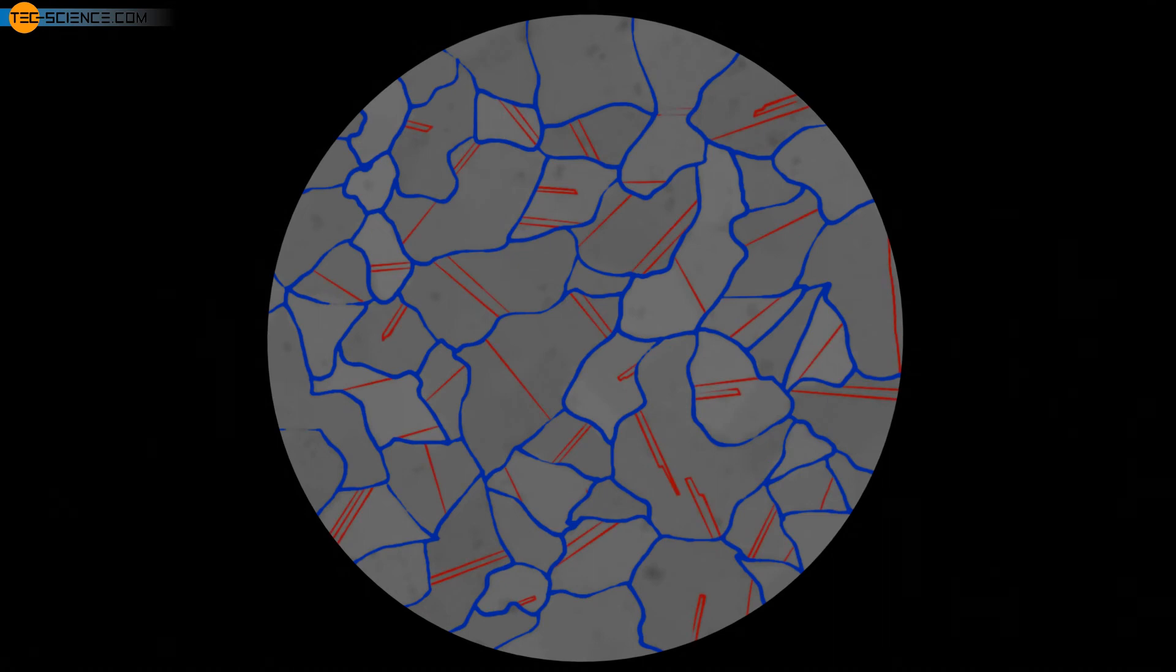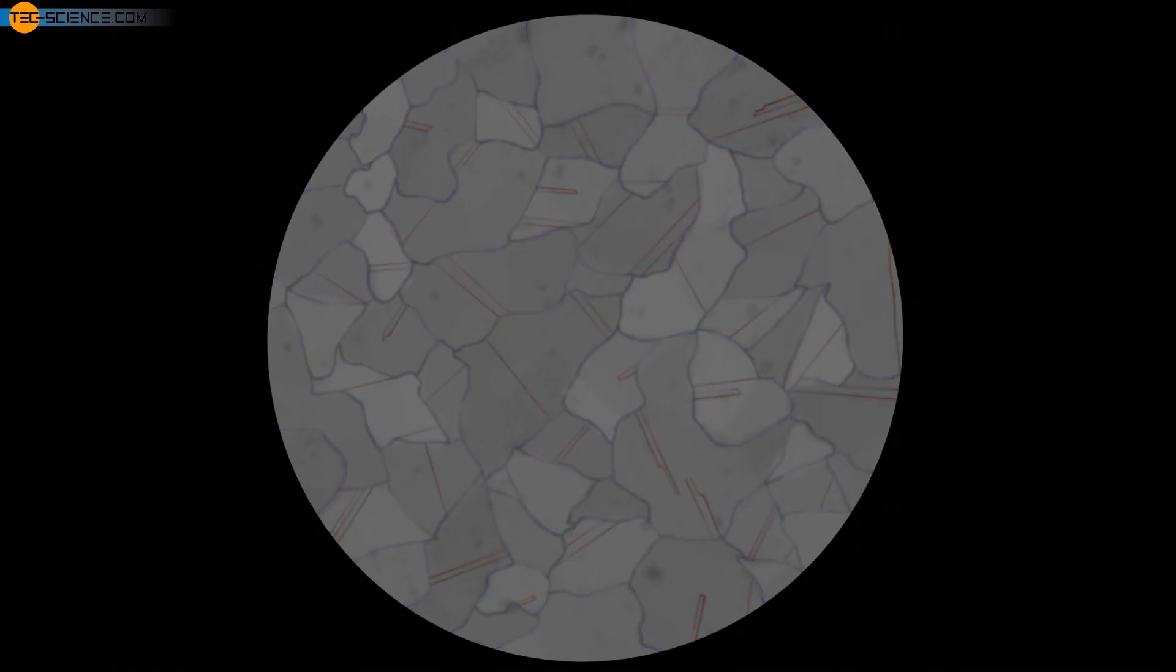While ordinary grain boundaries generally form incoherent interfaces, twin grain boundaries show a completely coherent interface. We will discuss the concept of coherence in more detail in a moment.